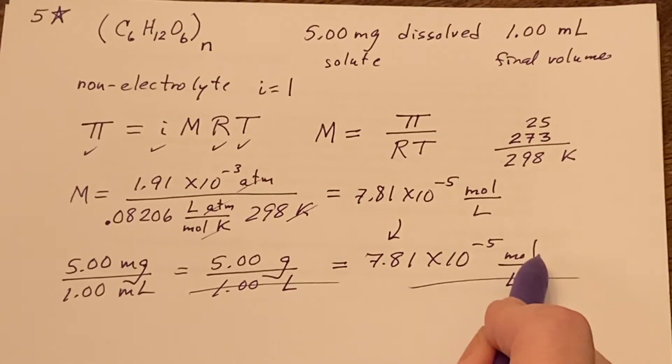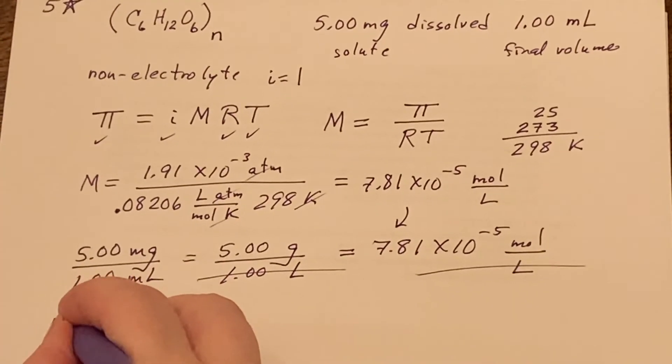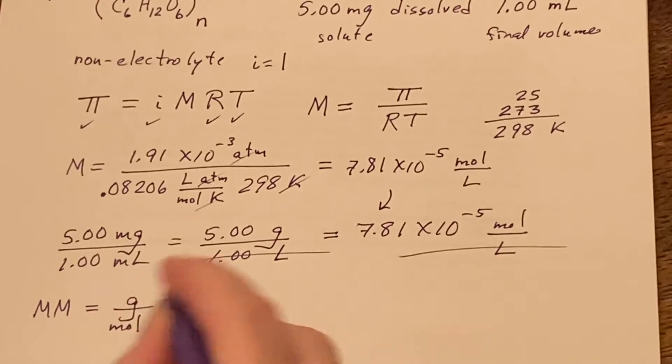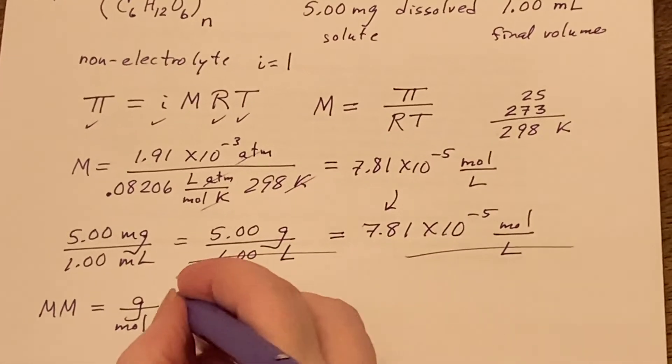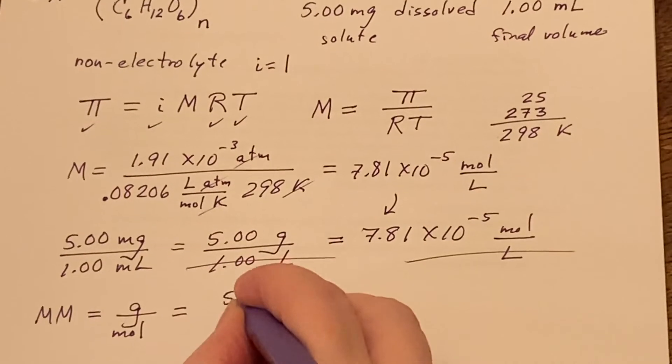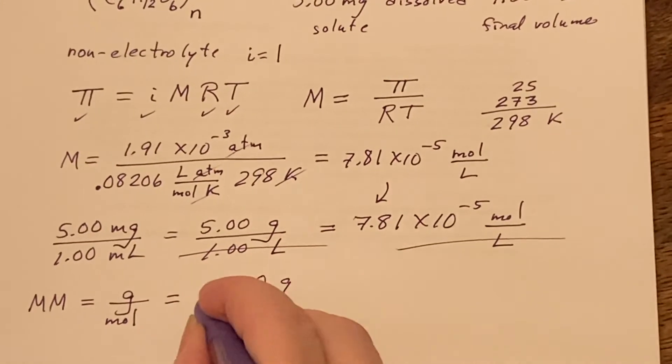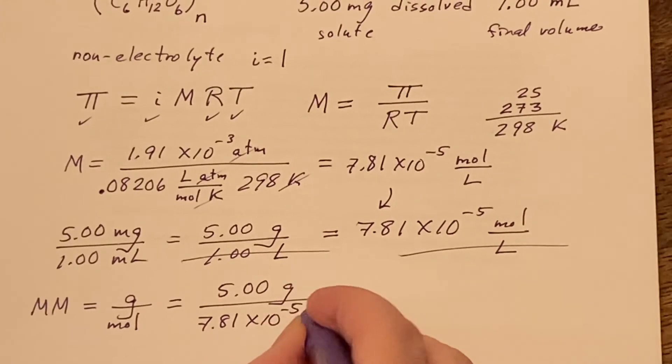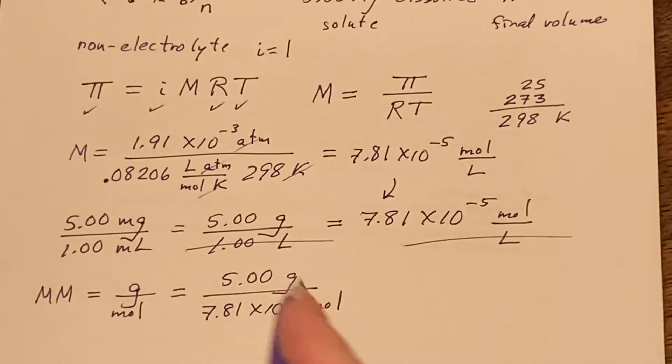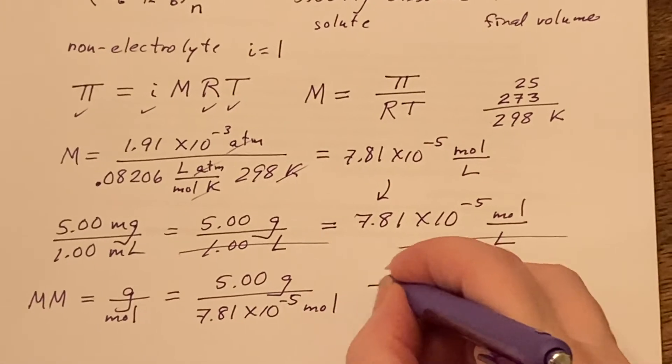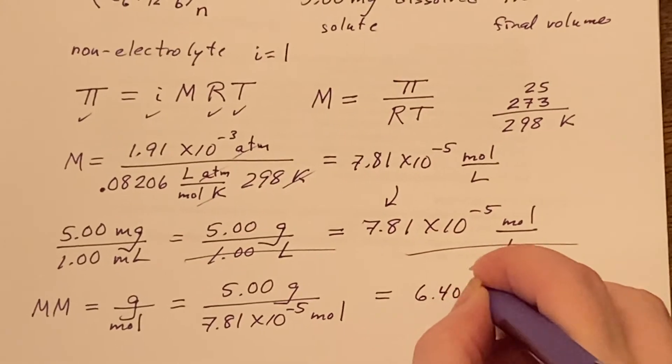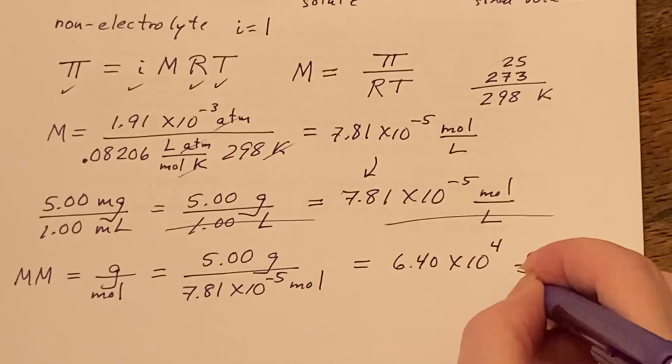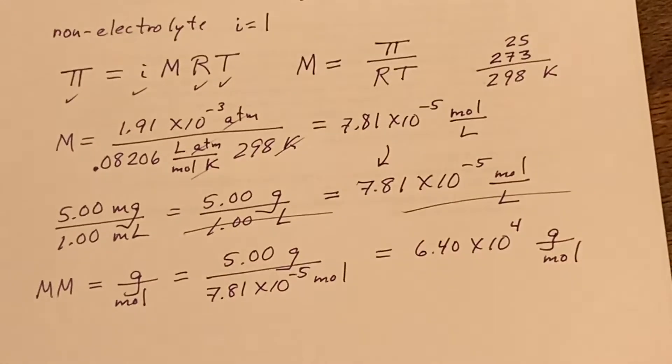Molar mass is always grams per mole, right? So if I just stack these two up so that I have the grams on the top and the moles on the bottom, I will have it in the right configuration. And the calculator will tell me that this is 6.40 × 10^4, and the units are grams per mole, which is the molar mass.